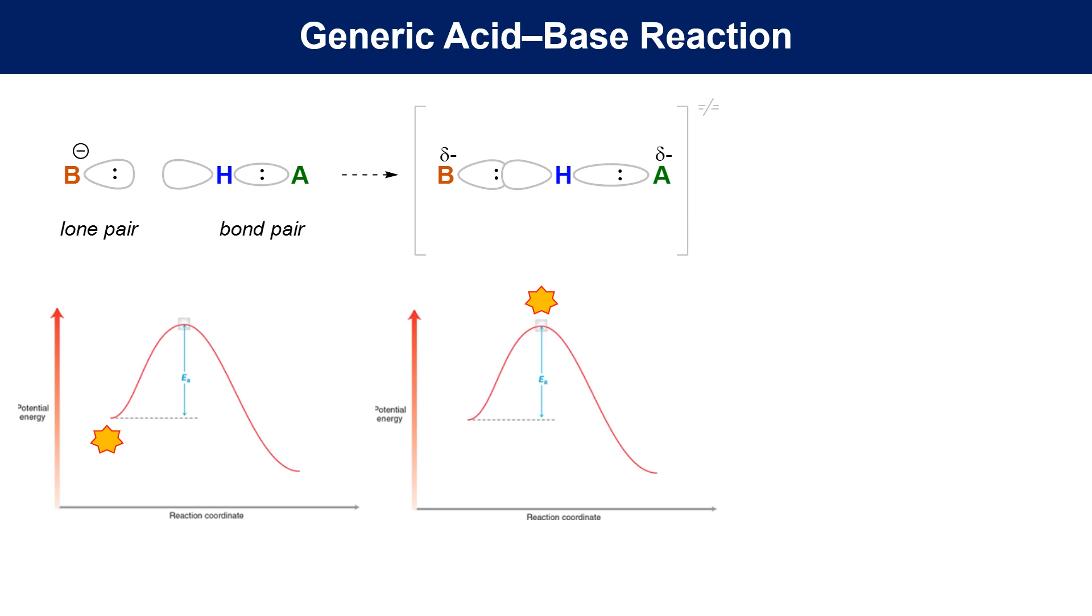The transition state is a theoretical picture of what the system looks like at the highest energy point. Completion of the BH bond formation and the HA bond breaking results in products. The original lone pair is now a bond pair and the original bond pair has become a lone pair.